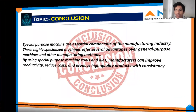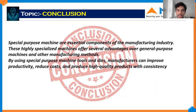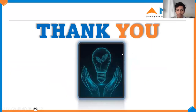After the research I have done on SPM machines, I have come to the conclusion that the SPM machine is an essential component used in the manufacturing industry. This machine is highly specialized and offers several advantages over general purpose machines and other manufacturing methods. By using SPM machines, tools and die manufacturing can improve productivity, reduce costs, and produce high quality products with consistency. Thank you.